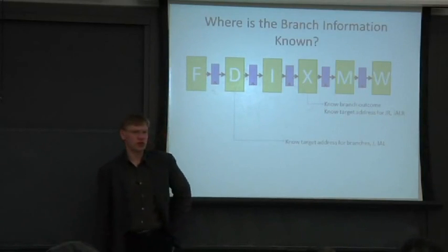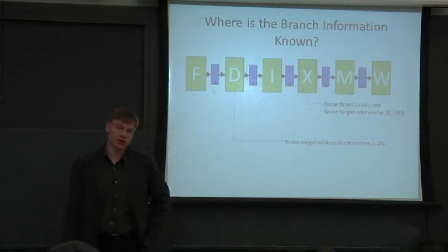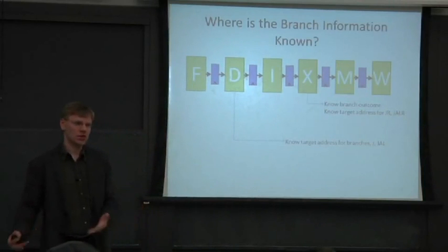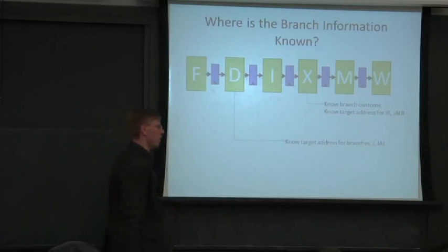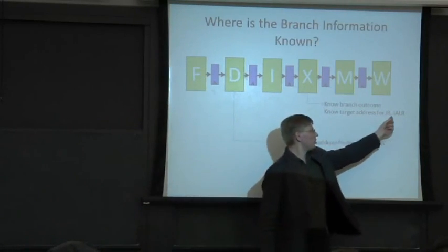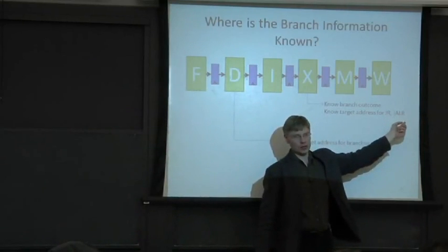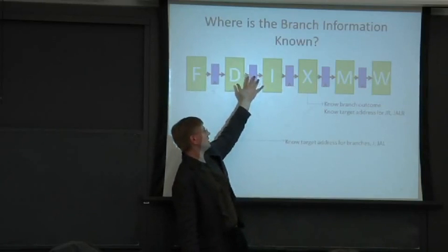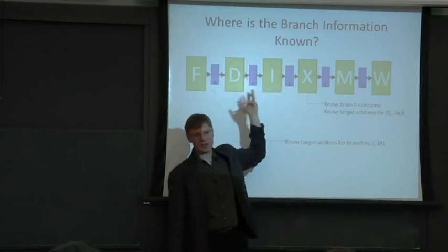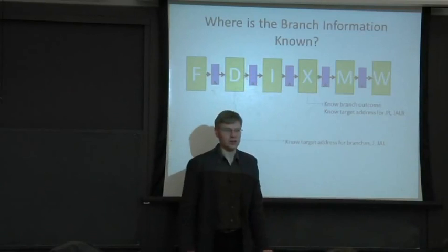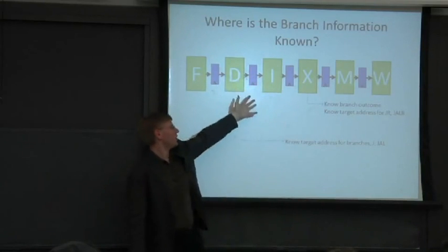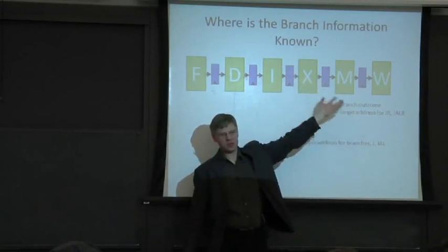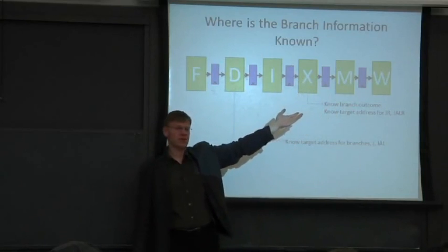Also target addresses for jump registers and jump and link register - you need to read the actual address that you're going to out of a register somewhere. So you can't even have a chance of trying to predict it out here or the destination. It's pretty hard because it's somewhere in the bypass. You just compute some value, then you jump through it.